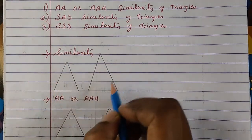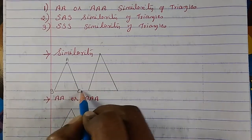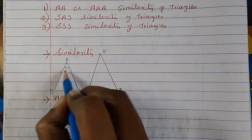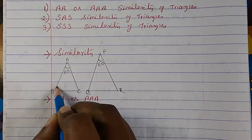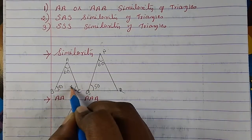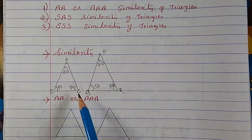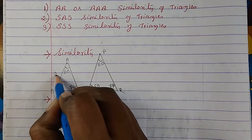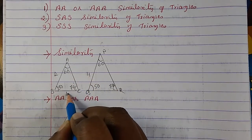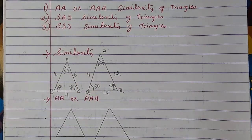Let's take two triangles of different sizes — triangle ABC and triangle PQR. These two triangles have angles 60, 60, 50, 50, 70, and 70. The corresponding angles are equal. The side measurements are: AB is 2 cm, PQ is 4 cm, AC is 6 cm, PR is 12 cm, BC is 4 cm, and QR is 8 cm.